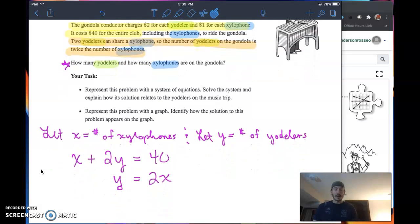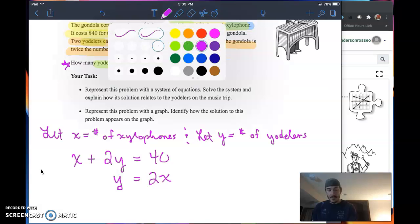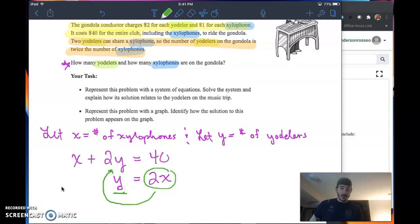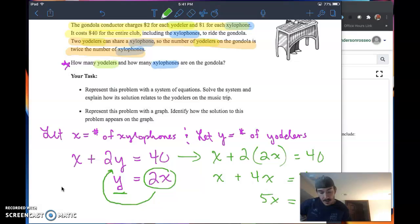Now we're going to solve. The solving method I'm going to choose is substitution. I want to substitute because in this second equation, I've got a variable that's already isolated. What that tells me is I can take the value of that variable and plug it into the other equation. I'll plug it into that first equation. x plus 2 times 2x equals 40. That's x plus 4x equals 40, so 5x equals 40. I divide by 5, and that gives me x equals 8. That means I've got 8 xylophones.